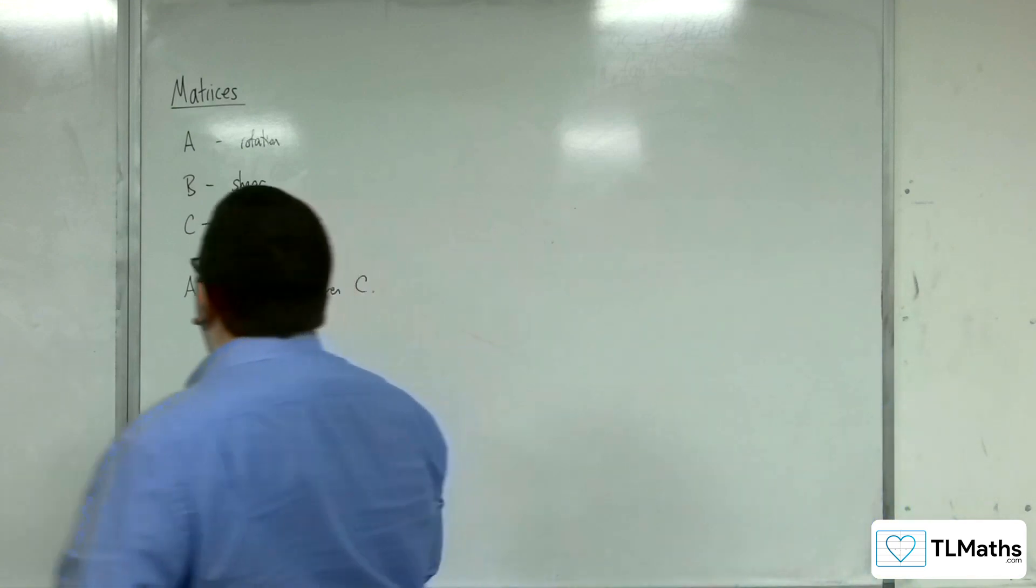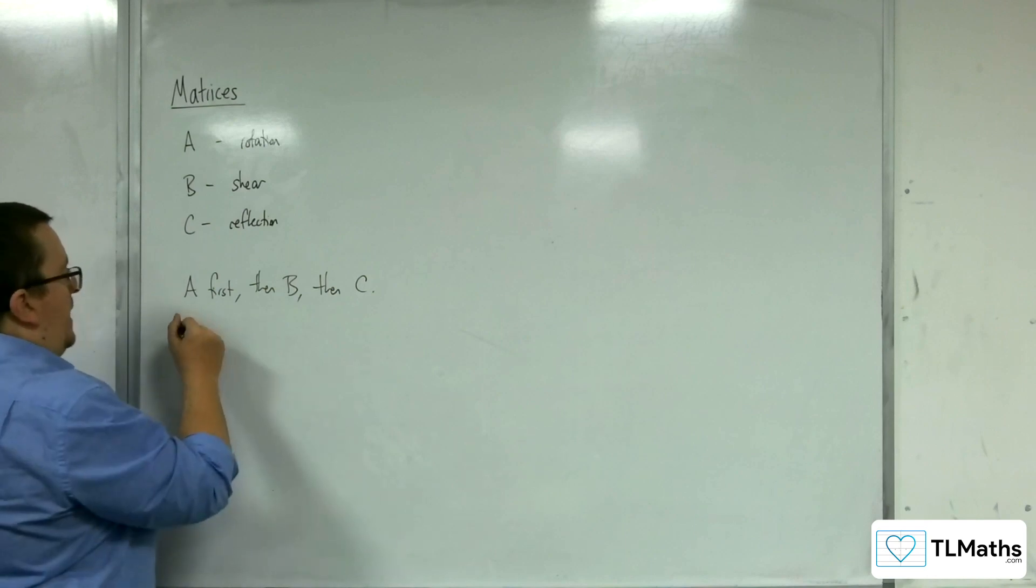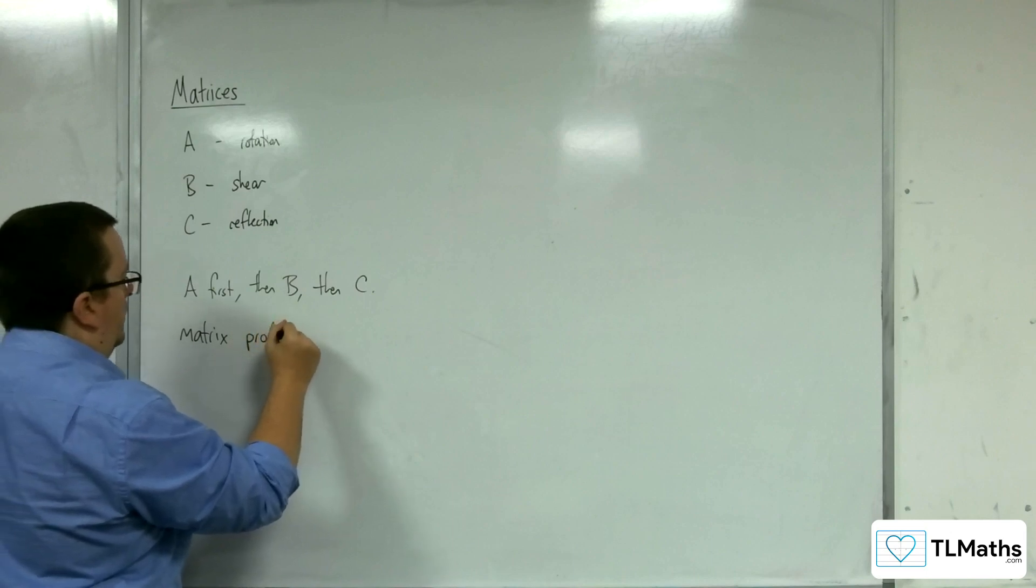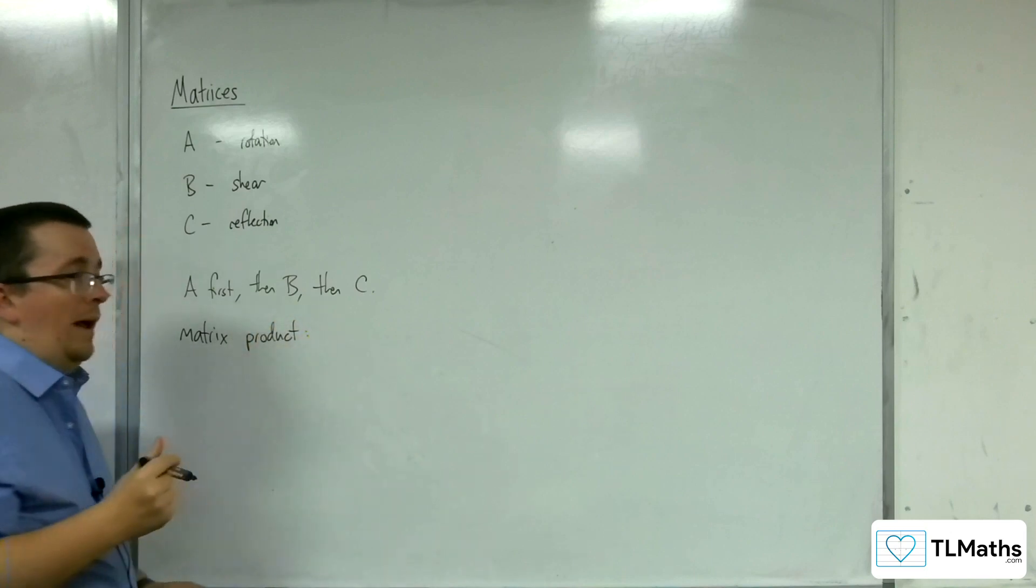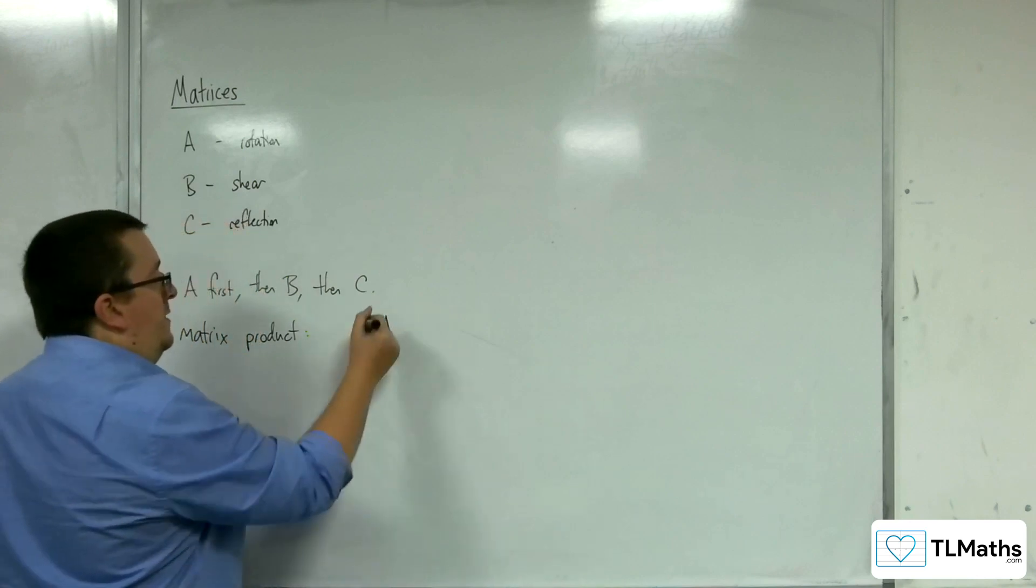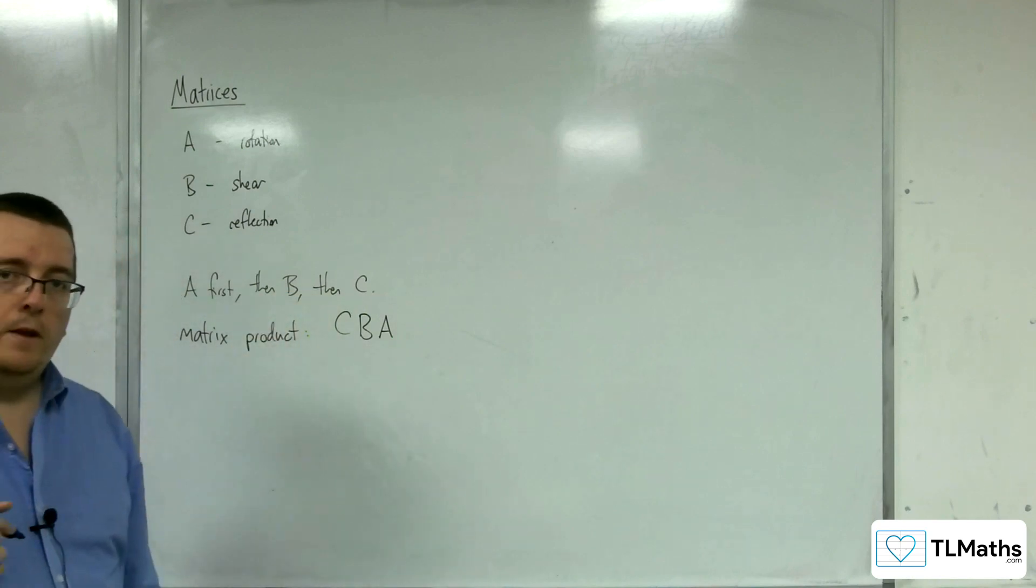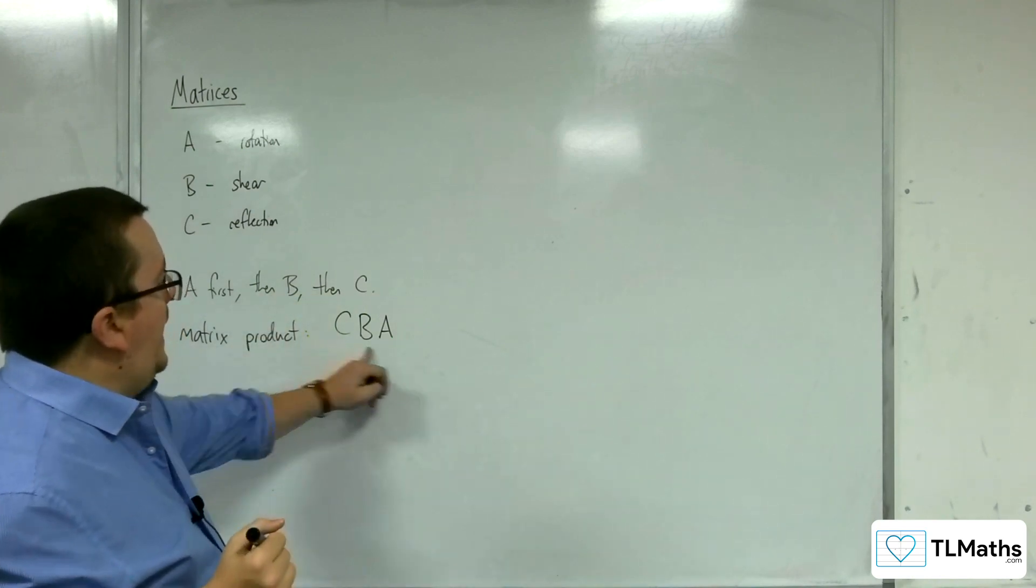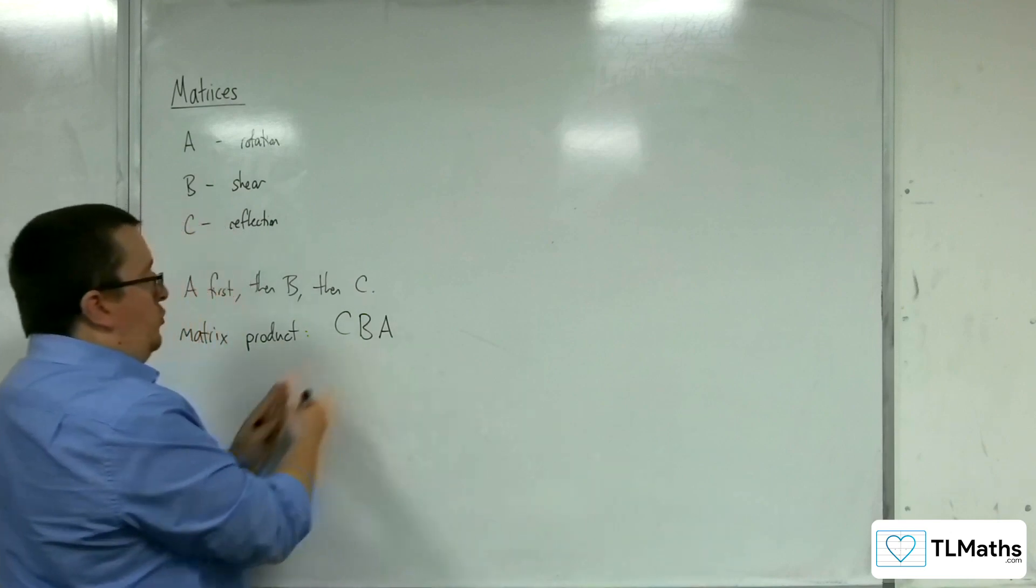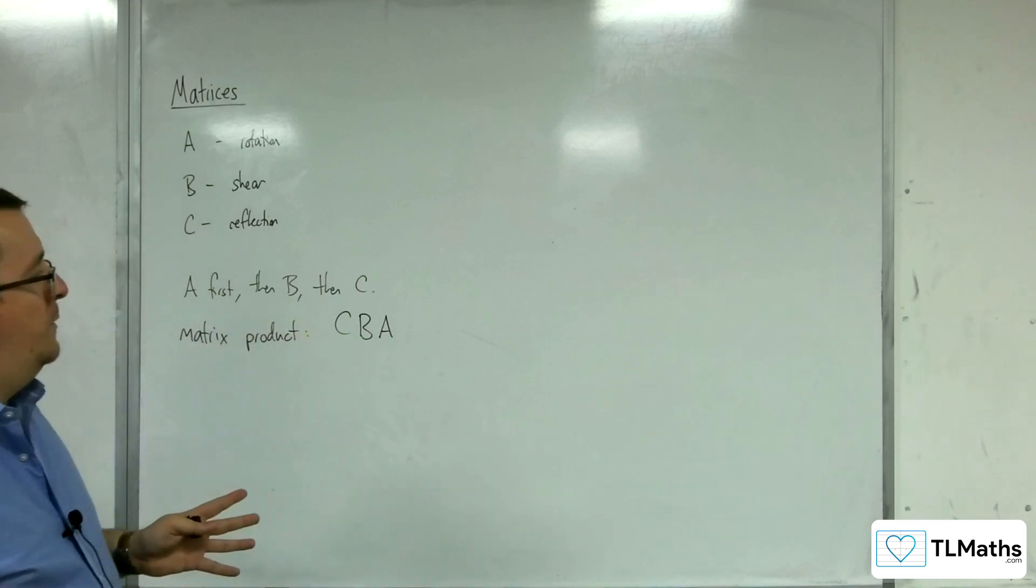So it's important that in order to do that you understand that the matrix would be the product where you have the A coming first goes over to the right, then B, then C. So you do it in this order. So each successive transformation appears to the left of the preceding ones.